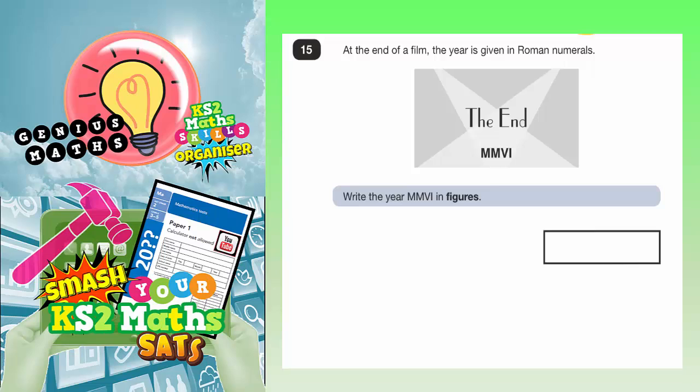At the end of a film, the year is given in Roman numerals. The end. And there it is in Roman numerals. Write the year, M, M, V, I, in figures.